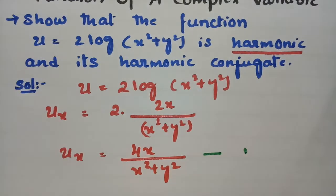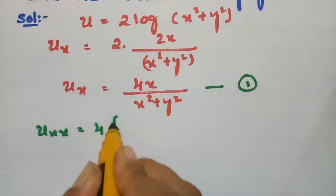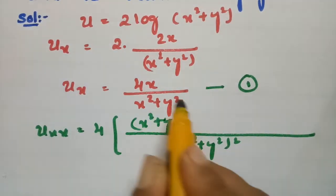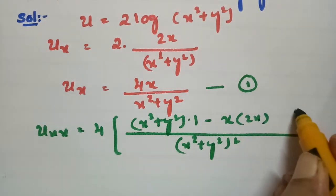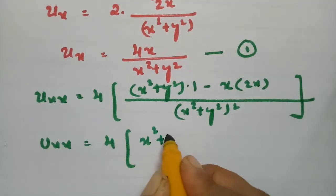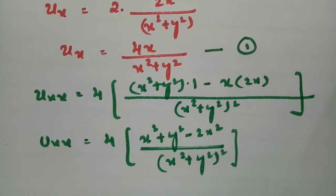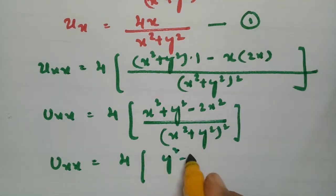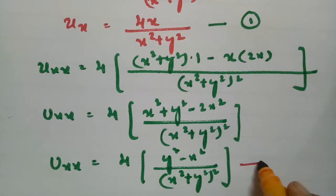Again I have to make a double derivative, so I differentiate ux with respect to x. Using the quotient rule (u/v rule), the denominator is x square plus y square whole square. Differentiating the numerator gives 1 and differentiating the denominator gives 2x. So u double x equals 4 times of x square plus y square minus 2x square, all divided by x square plus y square whole square. This is dou square u by dou x square.